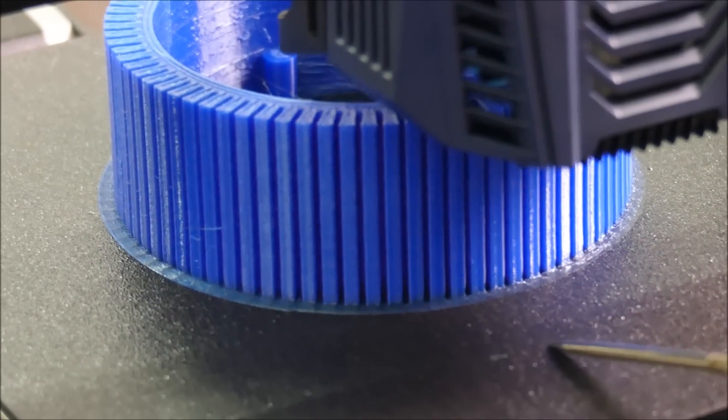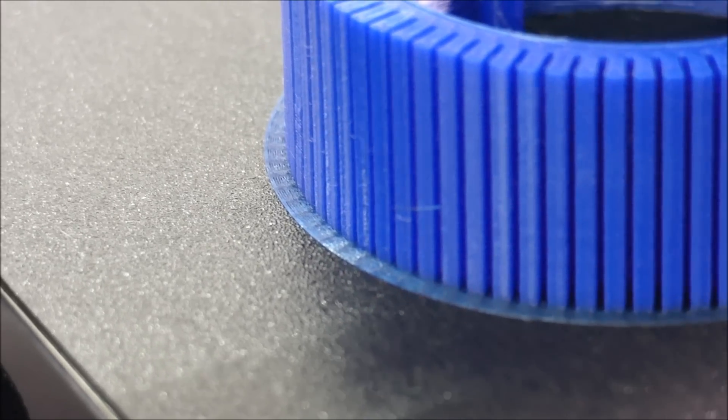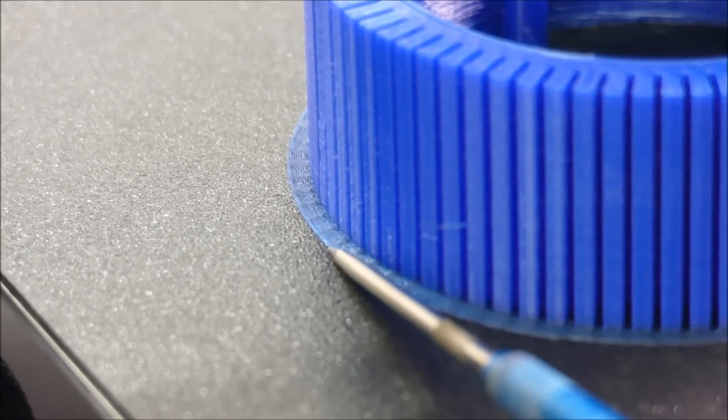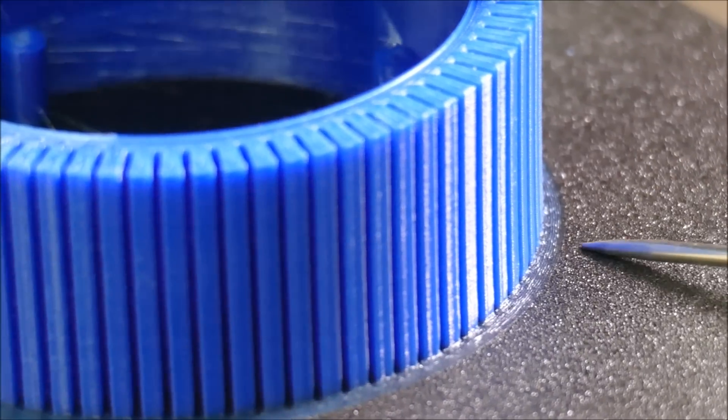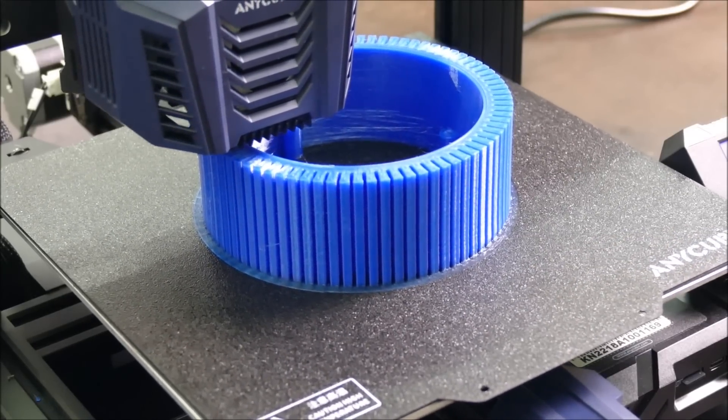Also, with these larger prints, I'm noticing inaccuracies with the bed leveling. So despite leveling the bed several times, you can see it's not quite close enough here when extruded, and on the opposite side, we've gotten too close. And from what I can tell, there's no manual way of solving that issue.